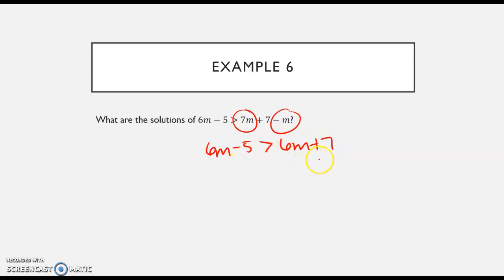From here, I am going to move my 6M. So I'm going to subtract 6M from both sides and my M's will disappear. And I'm left with negative five is greater than seven. Again, this will never be a true statement. Negative five is not greater than seven. And so since this is false, my answer is that there is no solution.